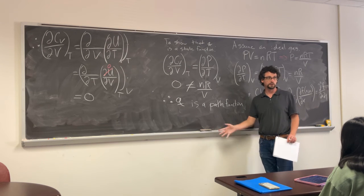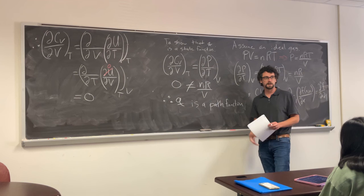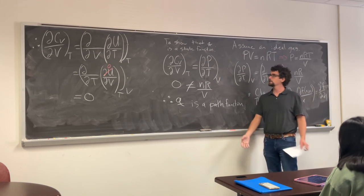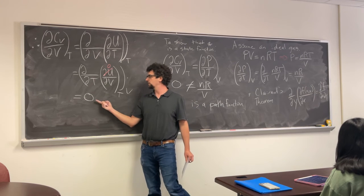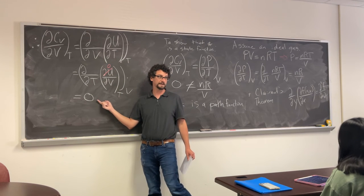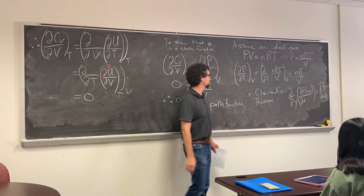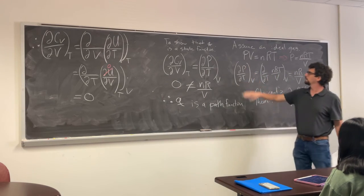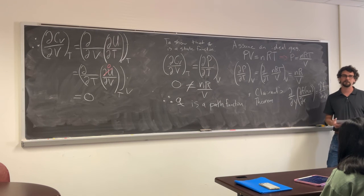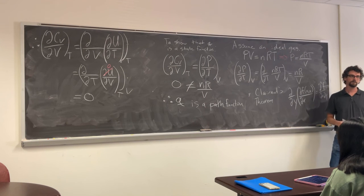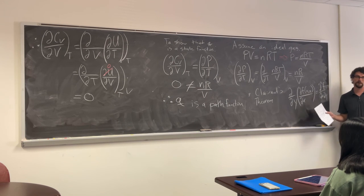A new state function called entropy and that's what we're going to talk about next time. So this time we showed hey, if you have an isothermal system and you assume a monatomic ideal gas, and that's a lot of times if it's isothermal you can make dU zero, and we show that heat is a path function and it is not a state function. Are there any questions right now?